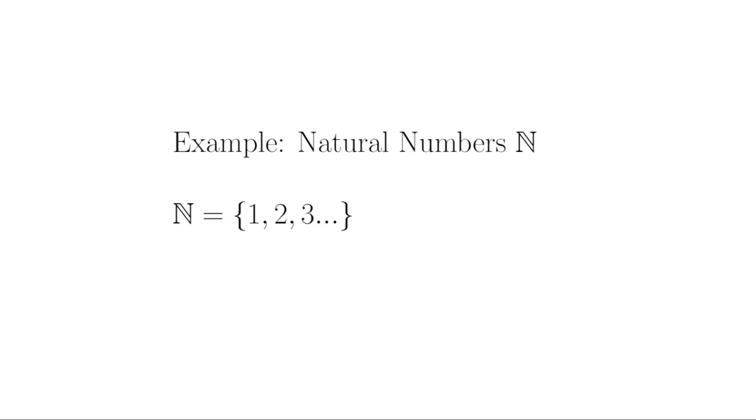Example, consider the set of natural numbers N, which are the counting numbers 1, 2, 3, 4, etc. N is for natural, by the way. These are sometimes referred to as the positive integers. Are the natural numbers closed under regular addition? Yes, they are. If I add any two natural numbers together, I'll get another natural number.